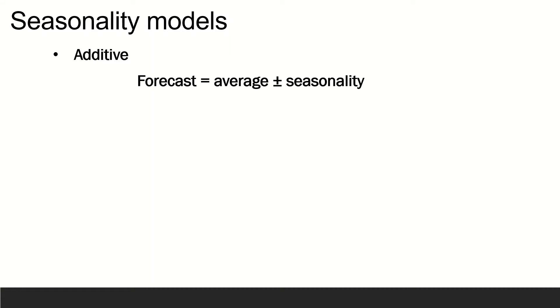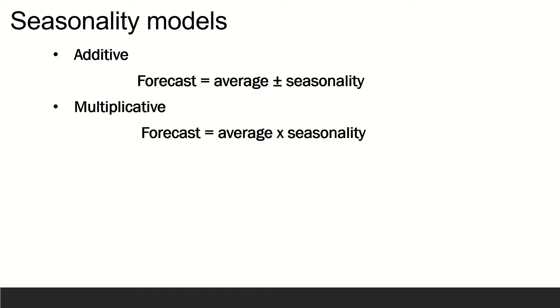There are two different models of seasonality: additive and multiplicative. In the additive model, seasonality is expressed as a quantity which is added to or subtracted from the series average in order to incorporate seasonality. In the multiplicative model, seasonality is expressed as a percentage of the trend amount, which is then used to multiply the value of a series to incorporate seasonality. In practice, businesses use the multiplicative model much more widely than the additive model, because it tends to be more representative of actual experience, so we shall focus exclusively on the multiplicative model.